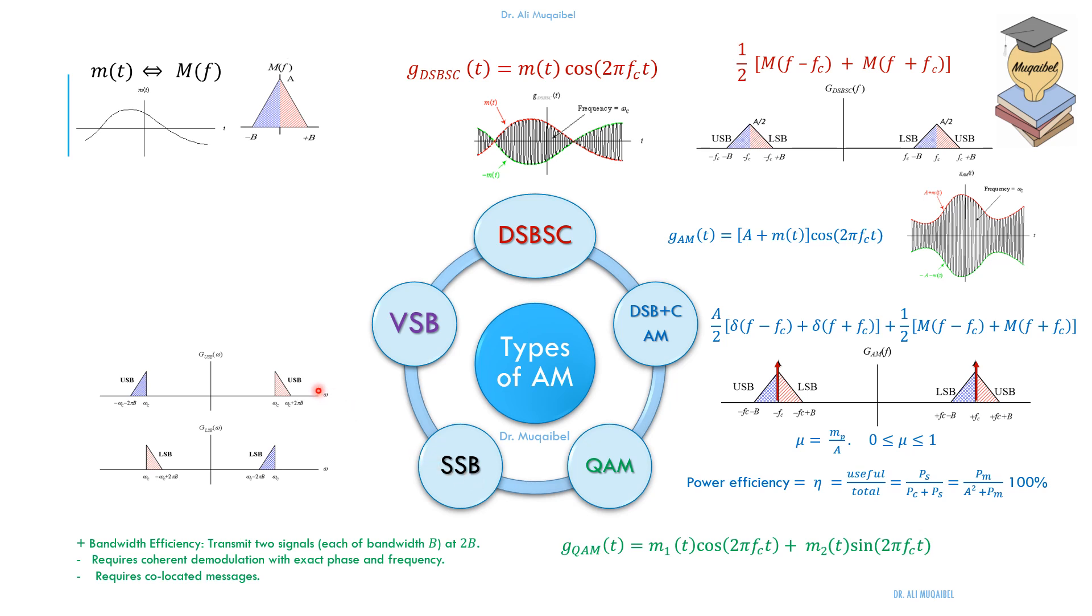And we have two types. One is upper sideband single sideband. Another one is lower sideband single sideband. How do we generate single sideband? The following expression shows you how to do this. We have the message modulated by cosine minus/plus the Hilbert transform of the message modulated by sine. If you want the upper sideband, you take the minus. If you want the lower sideband, you take the plus sine. So the advantage here is clearly half the bandwidth.